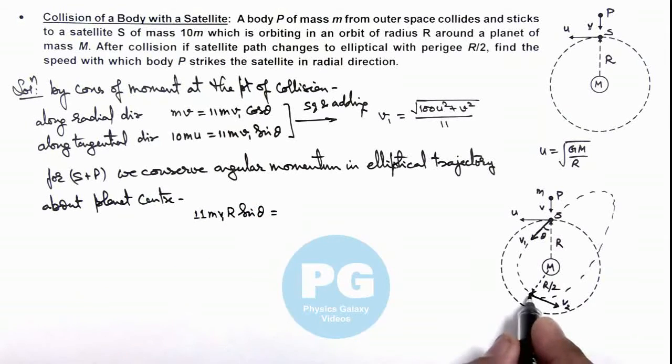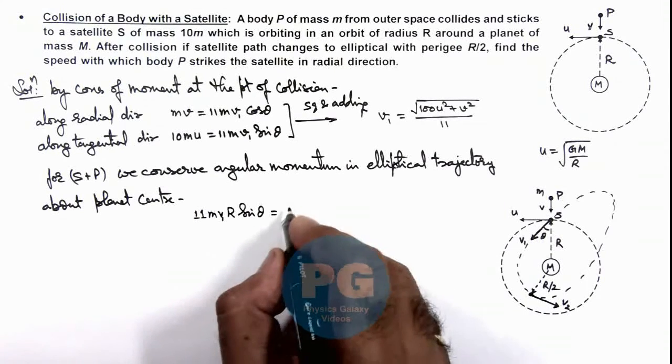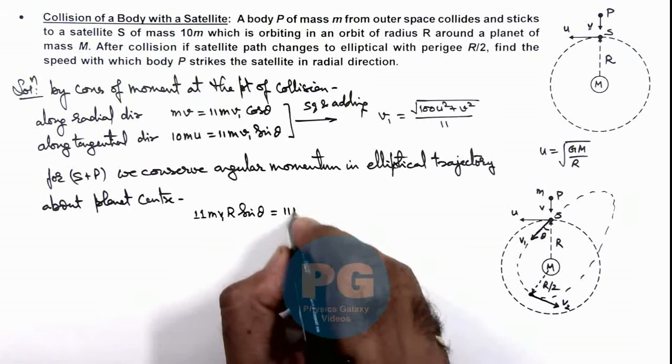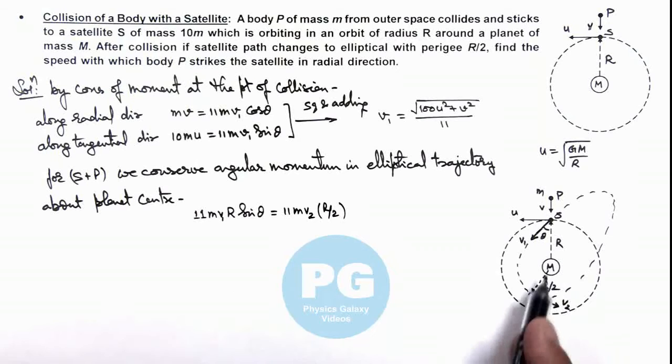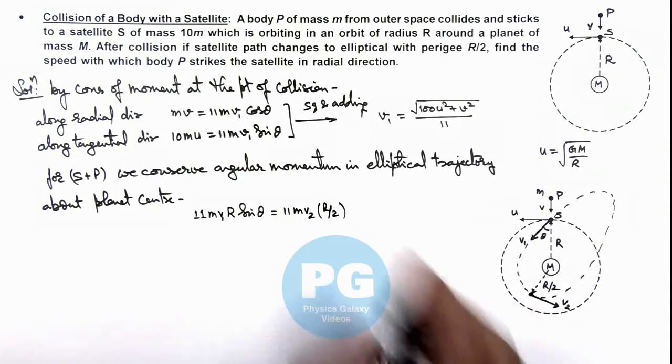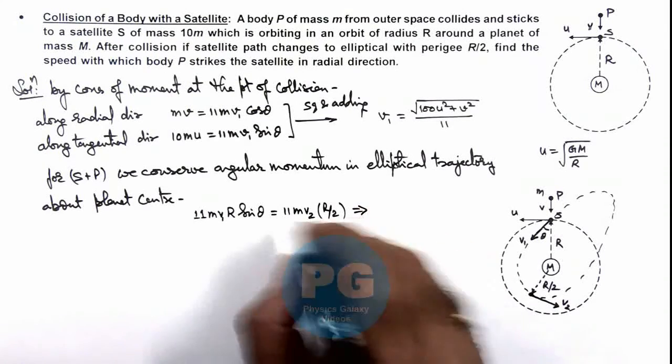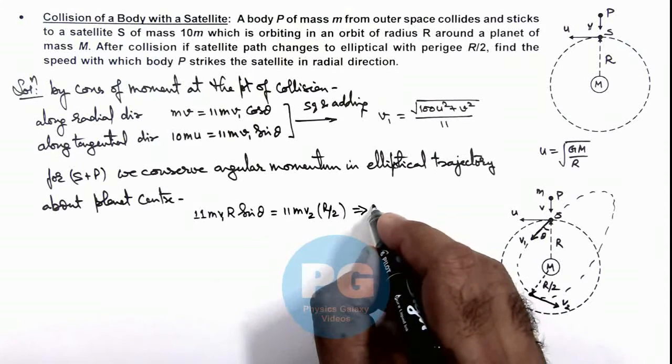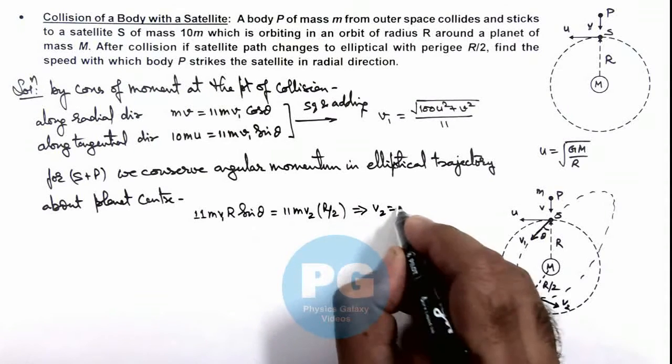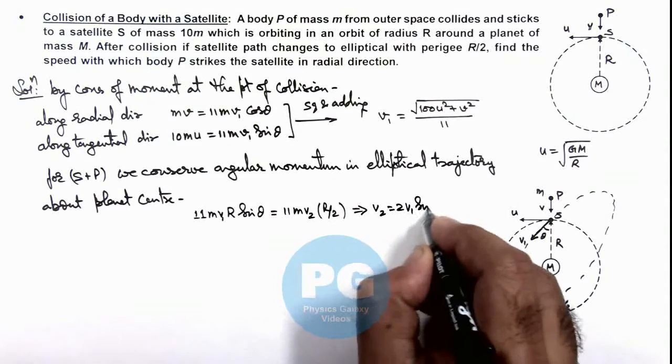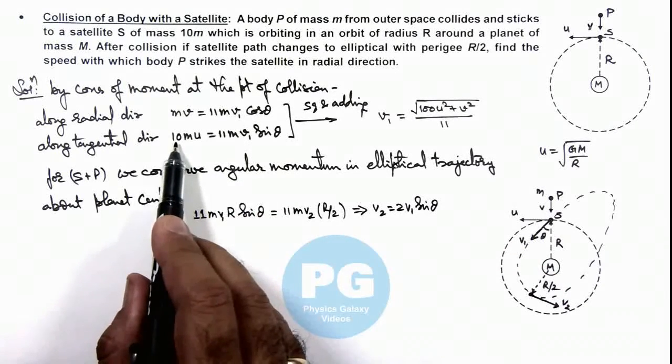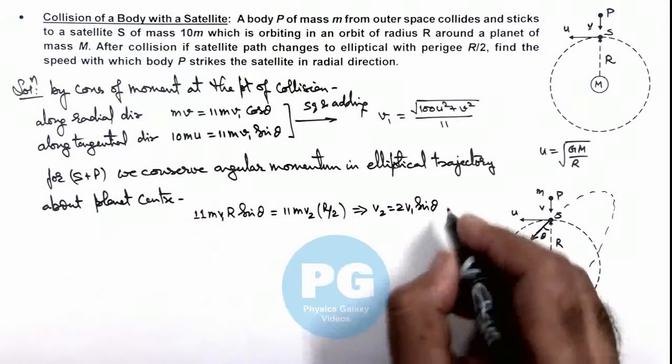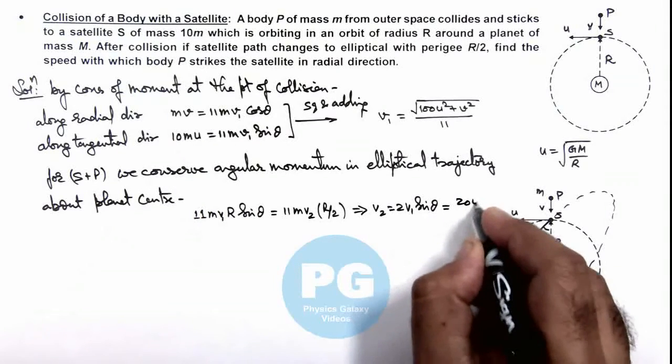And at the point of perihelion, the angular momentum is 11m v2 multiplied by R by 2, as we are already given that perigee is R by 2. So on simplifying this, we are getting the value of v2 is equal to 2 v1 sine theta. And v1 sine theta we are having as 10 by 11 u, so this is equal to 20u by 11.